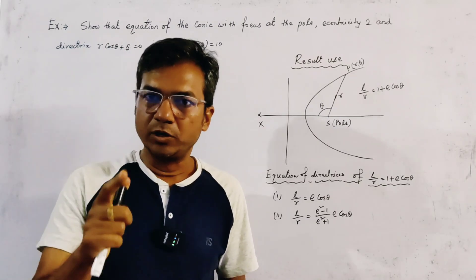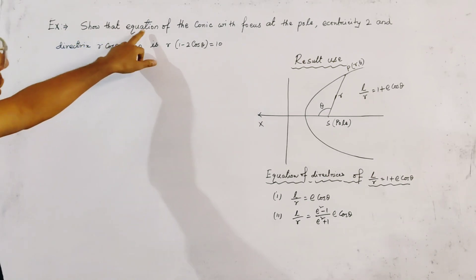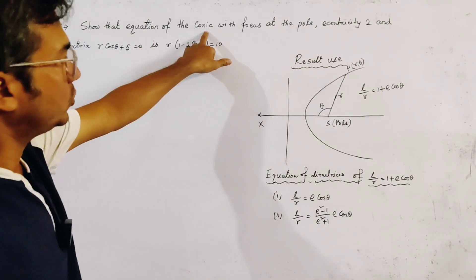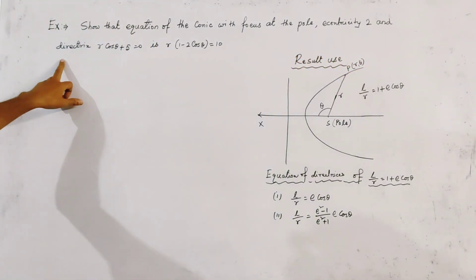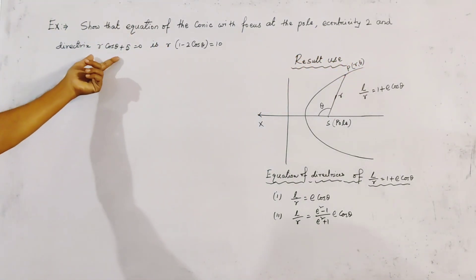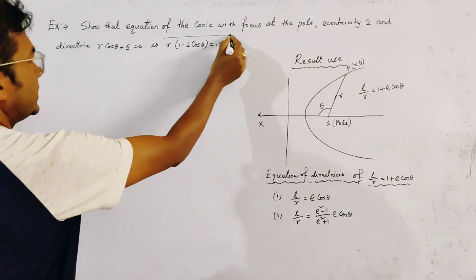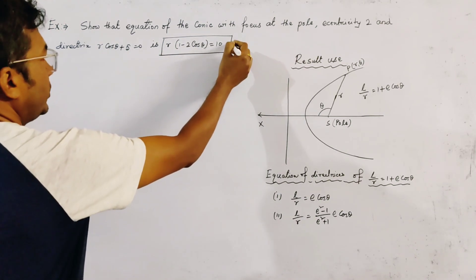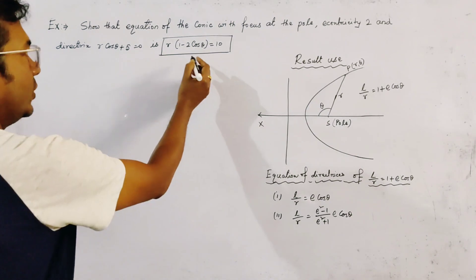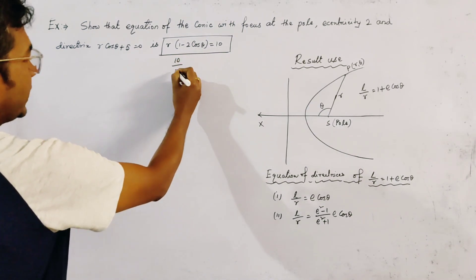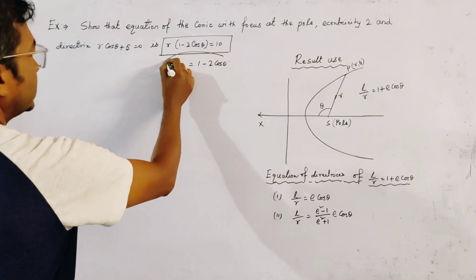A problem from polar equations: find the equation of a conic with focus at the pole, eccentricity 2, and directrix given by r·cosθ + 5 = 0. We have to prove the equation of the conic. Arranging in standard form, it is given by 10/r = 1 - 2·cosθ.